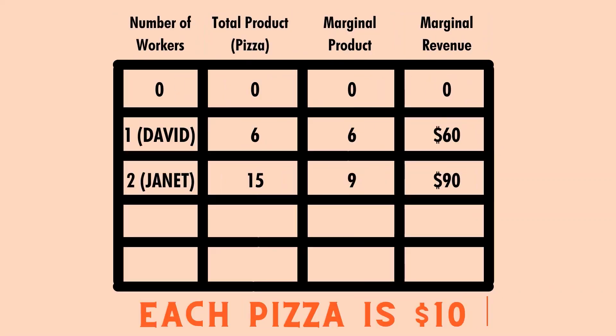Going back to the table, with the addition of Janet the total product — the total number of pizzas produced by all workers — increases to fifteen. Janet's marginal product, how many pizzas she alone makes, is nine, calculated by subtracting six from fifteen. The difference represents Janet's contribution to the pizzeria. Her marginal revenue is nine times ten dollars, which equals ninety dollars.